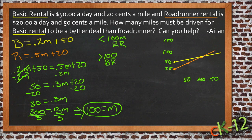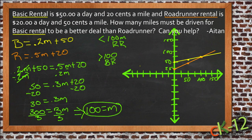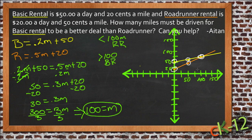We can see this graphically right here. If the orange line is the Roadrunner price, then Roadrunner obviously starts out cheaper but goes up more quickly. Basic Rental starts out more expensive but goes up less quickly. We can see the two prices intersect right here at 100 miles. At that point, the one that starts out cheaper becomes the more expensive and vice versa. So there you go, Aiden — I hope that helps.